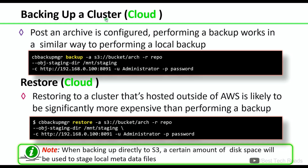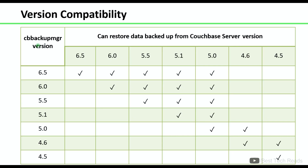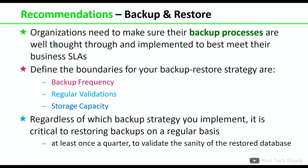For cloud backup, cb backup mgr can be used to archive directly into an Amazon S3 bucket. The command is similar to a regular backup. When taking backup directly into S3, a certain amount of disk space will be used to stage local metadata files — that is why we provide the `--obj-staging-dir` parameter in both backup and restore commands.